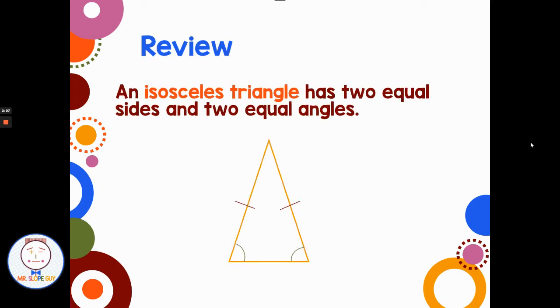Now, remember isosceles triangles? Those are the ones that have two sides and two angles that are equal. So if we have two sides that are equal, these two angles at their base are also equal. So that's handy when it comes to talking about isosceles triangles to know the definition.